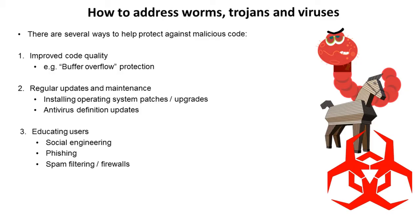From a standard user's point of view, there are many things which can be done to help prevent against the dangers of worms, trojans and viruses. An obvious one, but often overlooked, is regular updates and maintenance of your PC. You regularly update and service a car, but how often do you do regular routine maintenance on your PC? Make sure you're installing all operating system updates and patches. Make sure you have an antivirus program and that the virus definitions are being updated regularly. If your virus definition software is a week out of date, there could potentially be dozens or hundreds of new viruses that your program is unaware of.